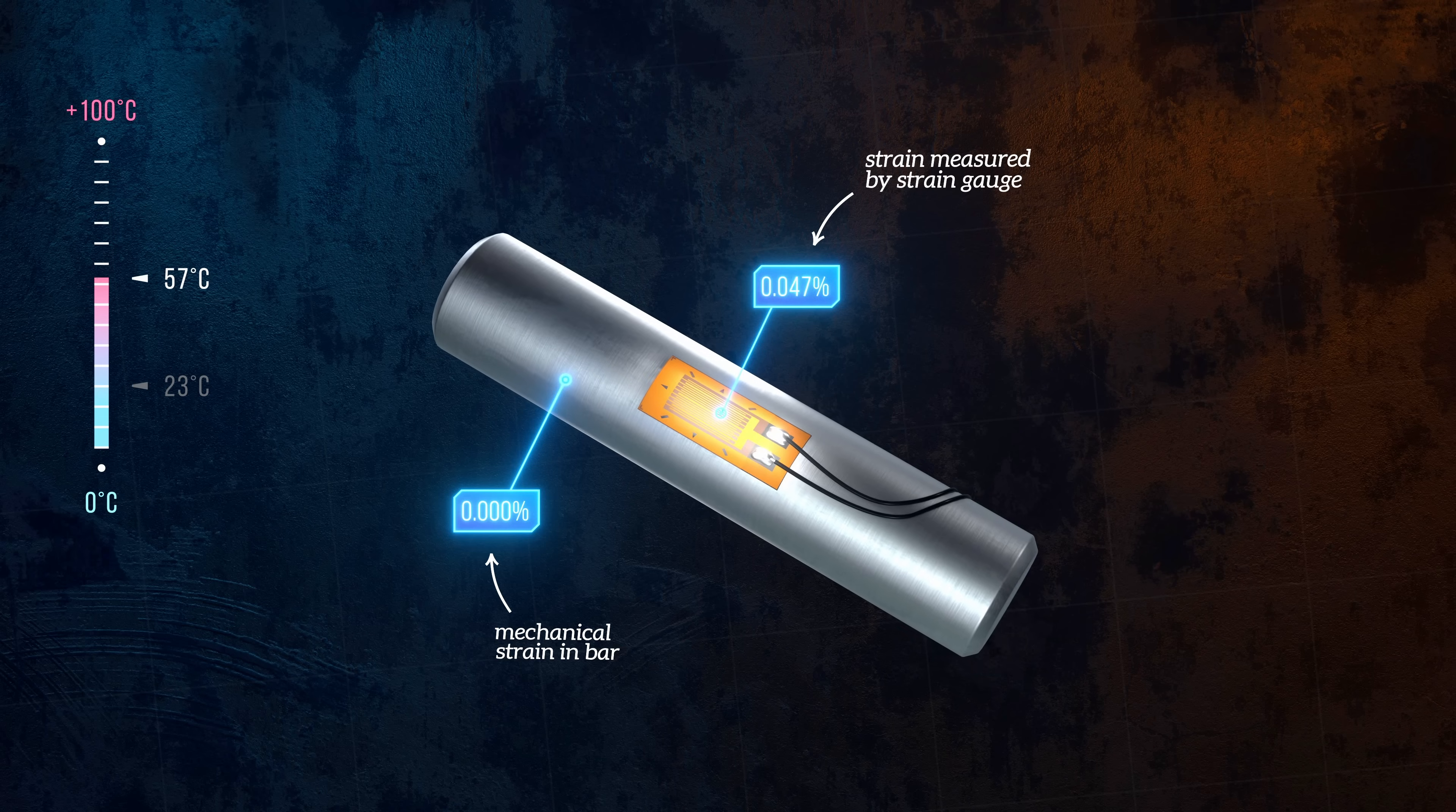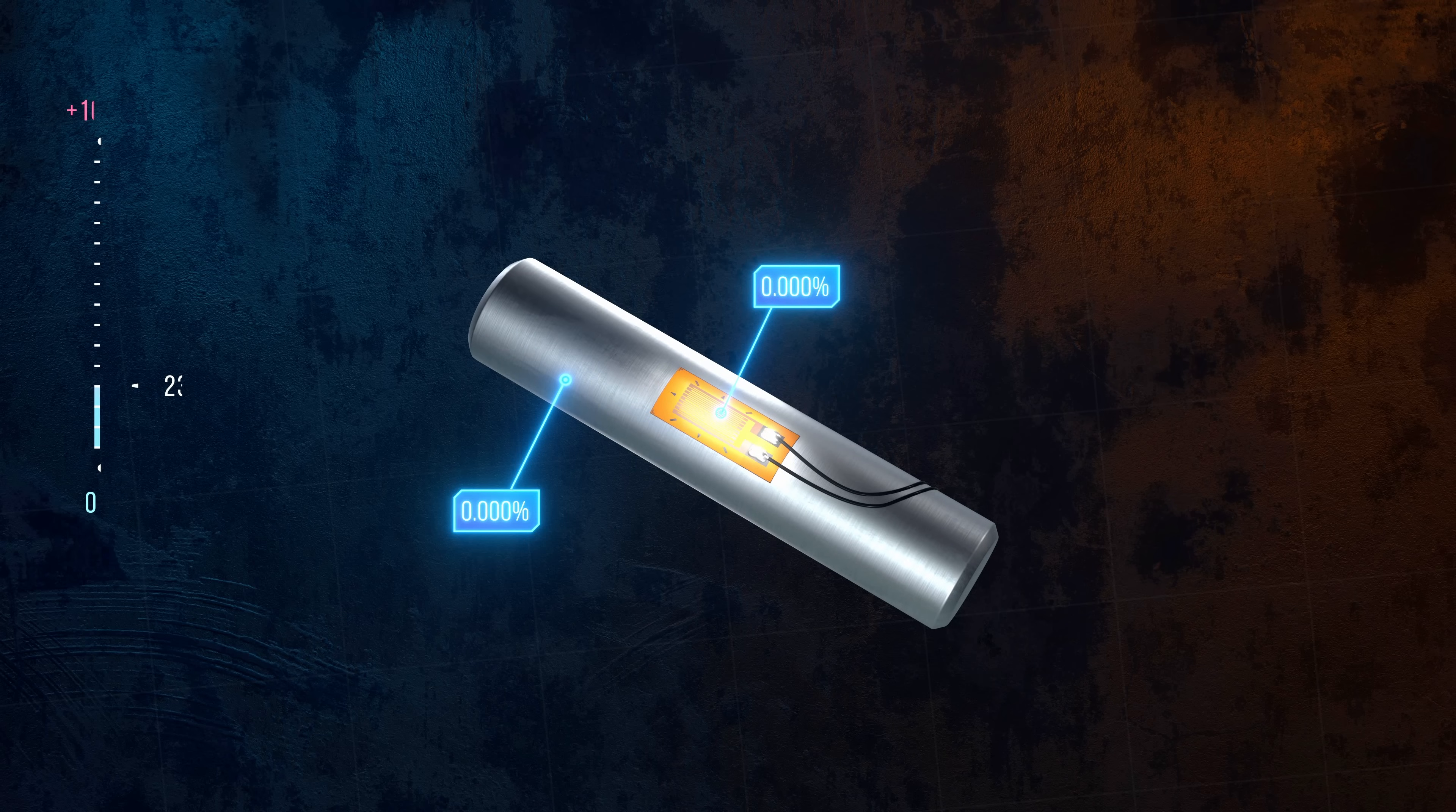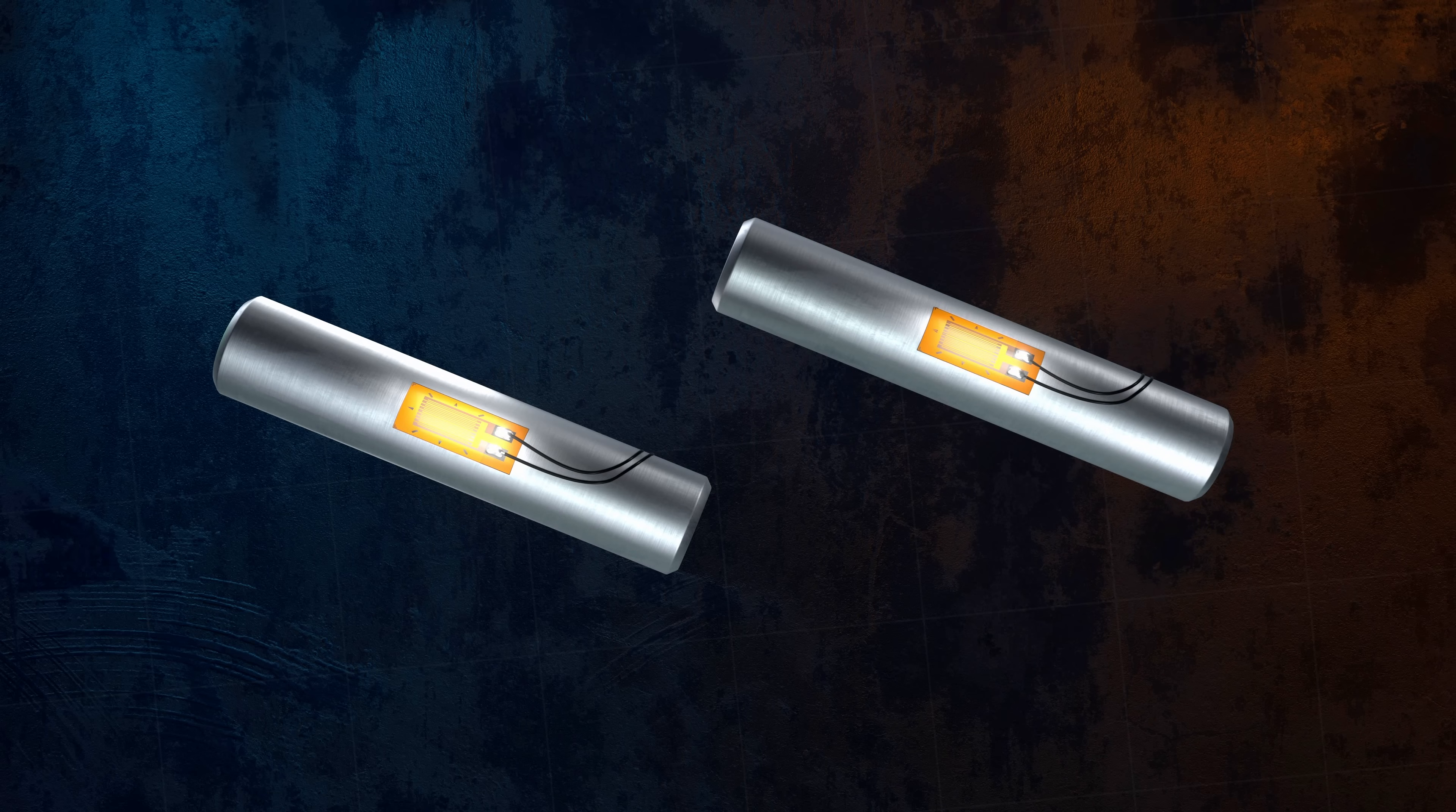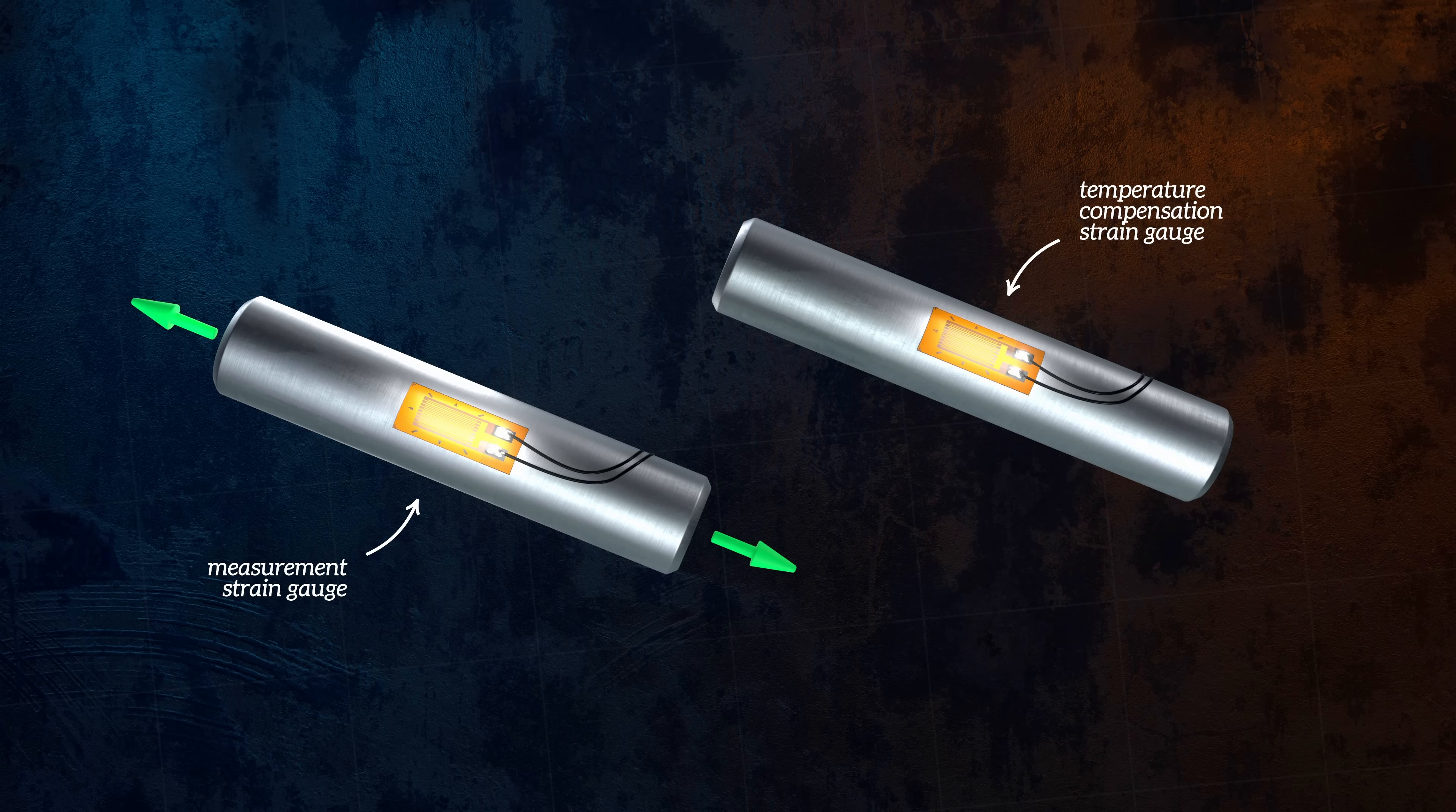Active compensation uses a second dummy strain gauge to compensate for thermal expansion. It's placed either in an unstressed region of the object being measured, or on a reference part that will experience the same level of thermal expansion, but without any applied loads. Both strain gauges are used in a half-bridge circuit, which cancels out the effects of thermal expansion.